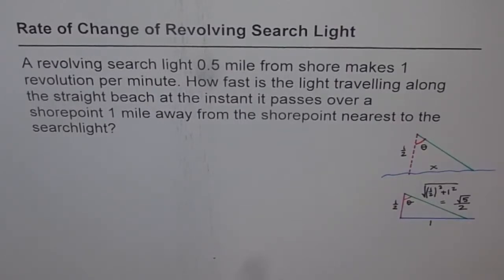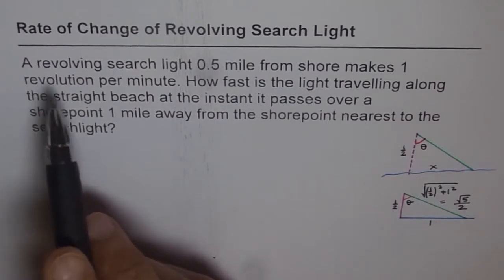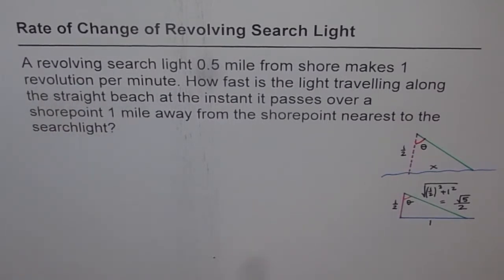Let us now understand how to solve a word problem involving trigonometric ratios. Rate of change of revolving searchlight: a revolving searchlight 0.5 mile from shore makes one revolution per minute. How fast is the light travelling along the straight beach at the instant it passes over a shore point one mile away from the shore point nearest to the searchlight?